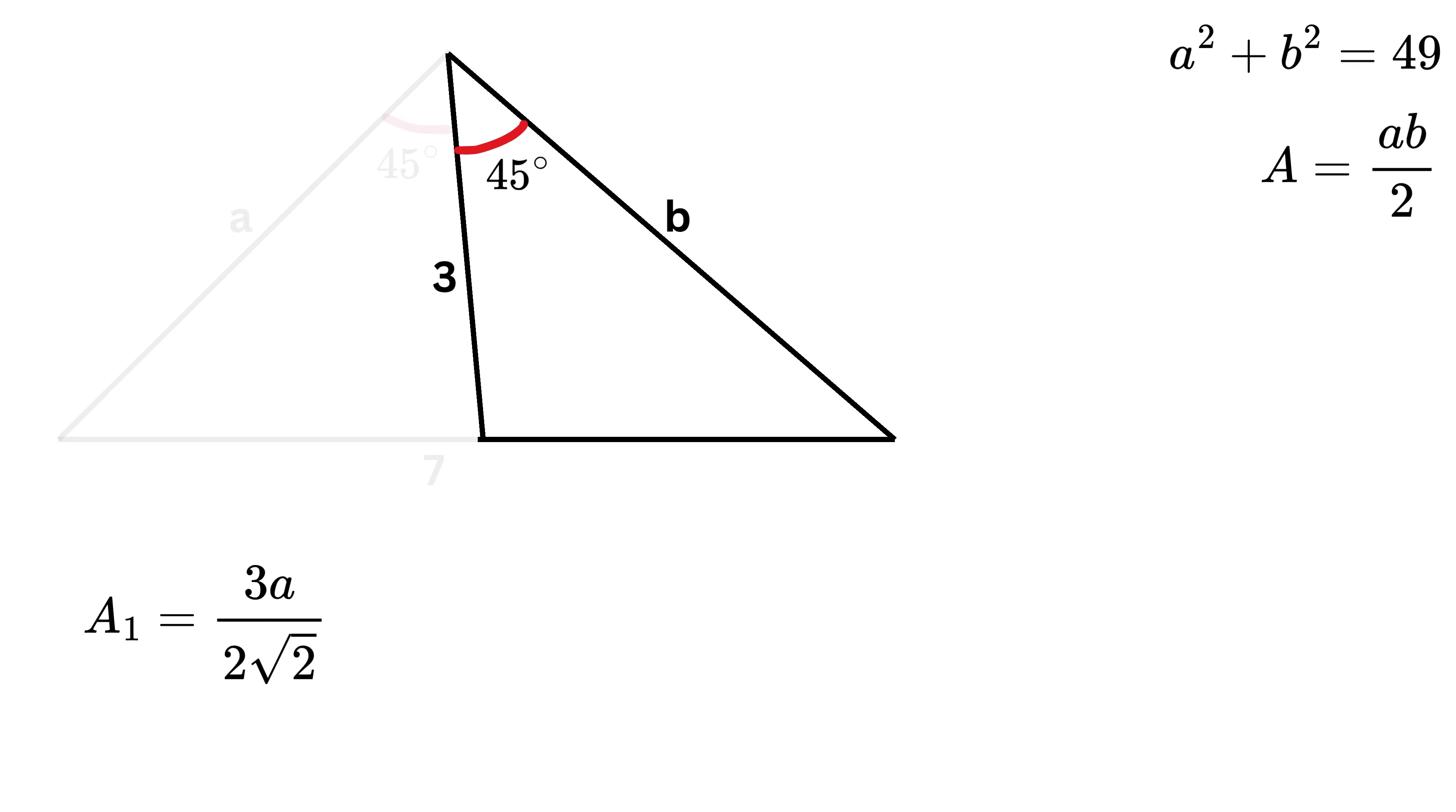Similarly, what will be the area of this smaller triangle on the right side? This side length is B, and this is three, and this angle is 45 degrees. So its area will be equal to 3B over 2 root 2.